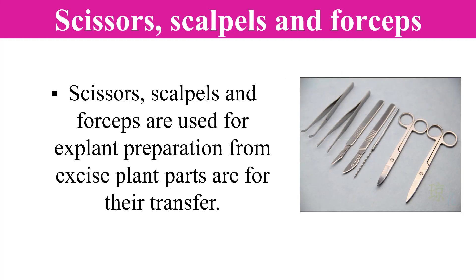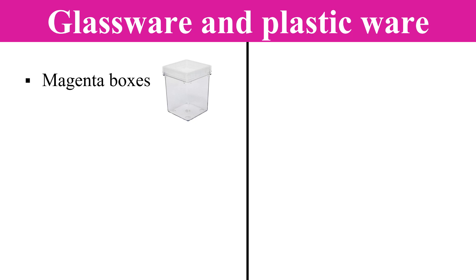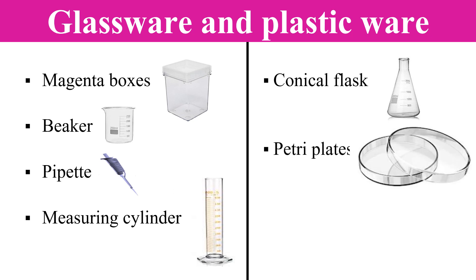You will also need scissors, scalpel, and forceps — once you have your explant, you perform dissection of your plant part and use it in the experiment. For dissection and various purposes you must have forceps, scissors, and scalpel. Glassware and plasticware are also a basic necessity: this includes magenta boxes for culturing, beakers, pipettes for pipetting solutions, measuring cylinders, conical flasks, petri plates for culturing, and test tubes.